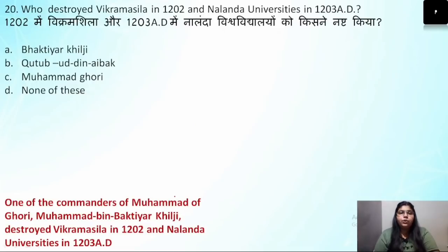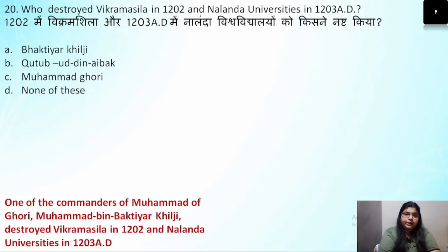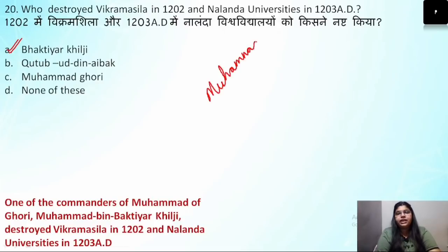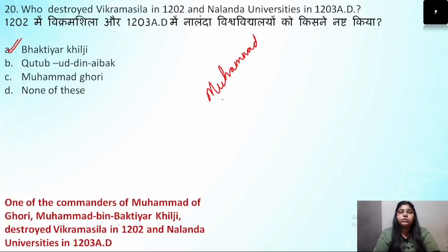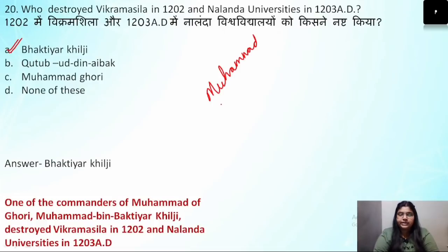Question number 20: Who destroyed Vikramshila University and Nalanda University? The correct answer is Bakhtiyar Khilji. Muhammad Gauri had some slaves and commanders — one was Qutbuddin Aibak, and another was Bakhtiyar Khilji, who in 1202 and 1203 completely destroyed Vikramshila University and Nalanda University. This is a frequently asked question.